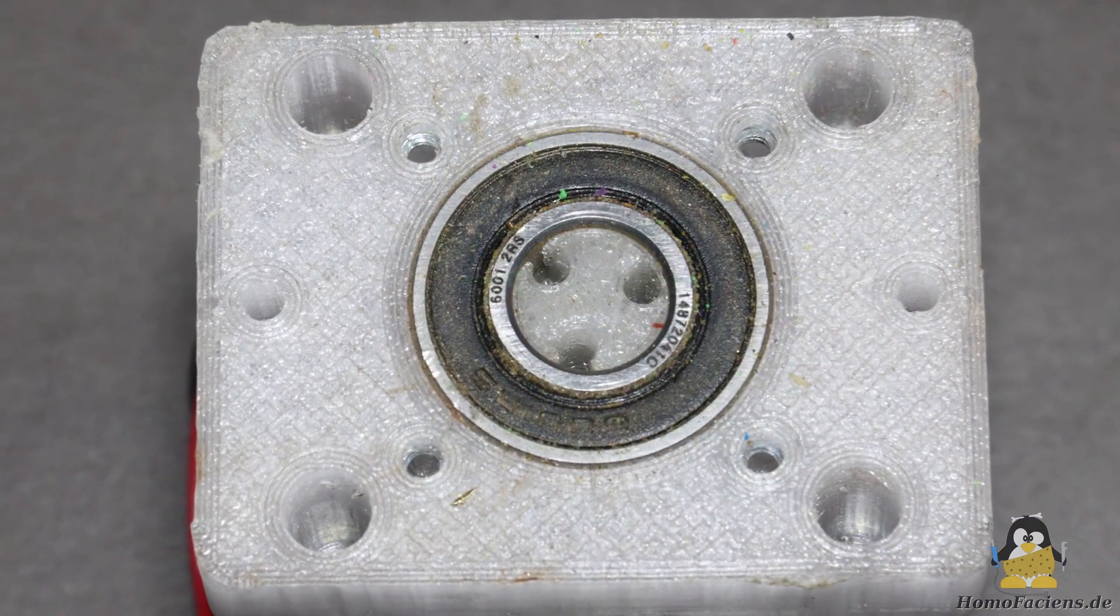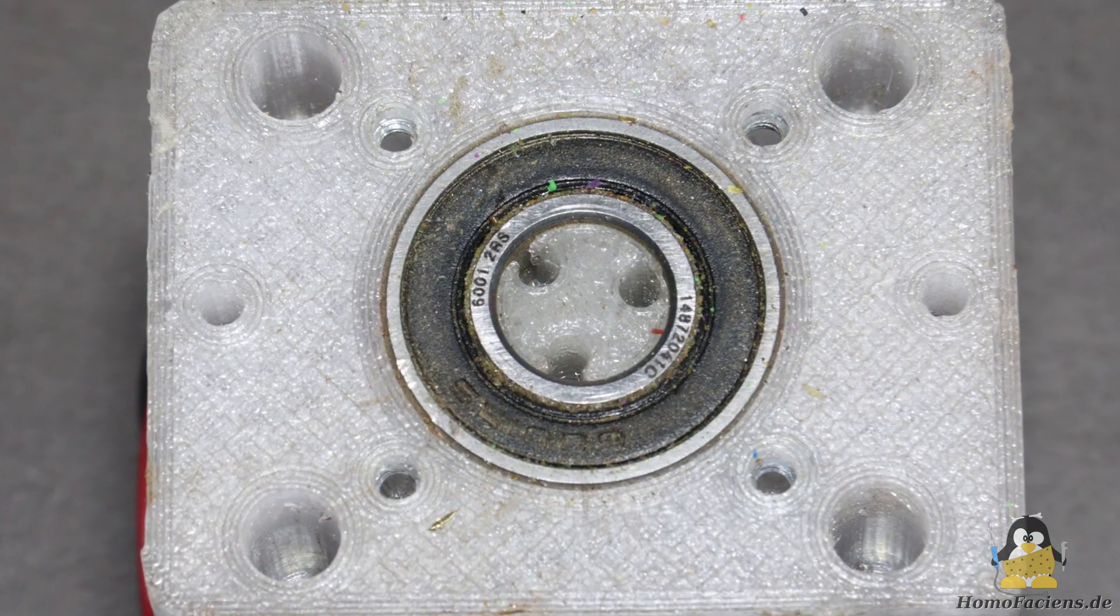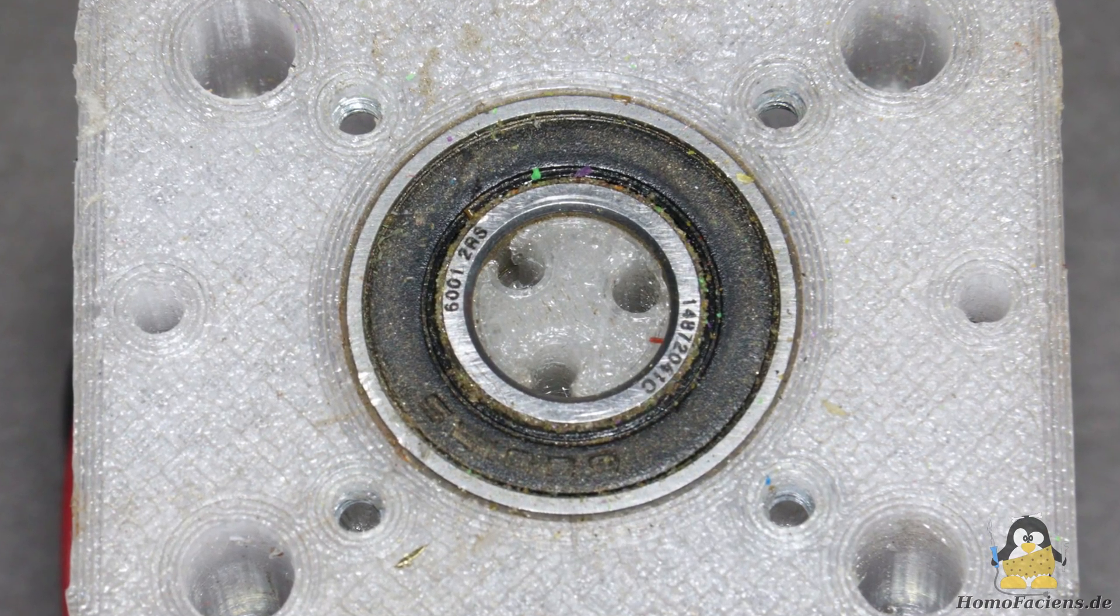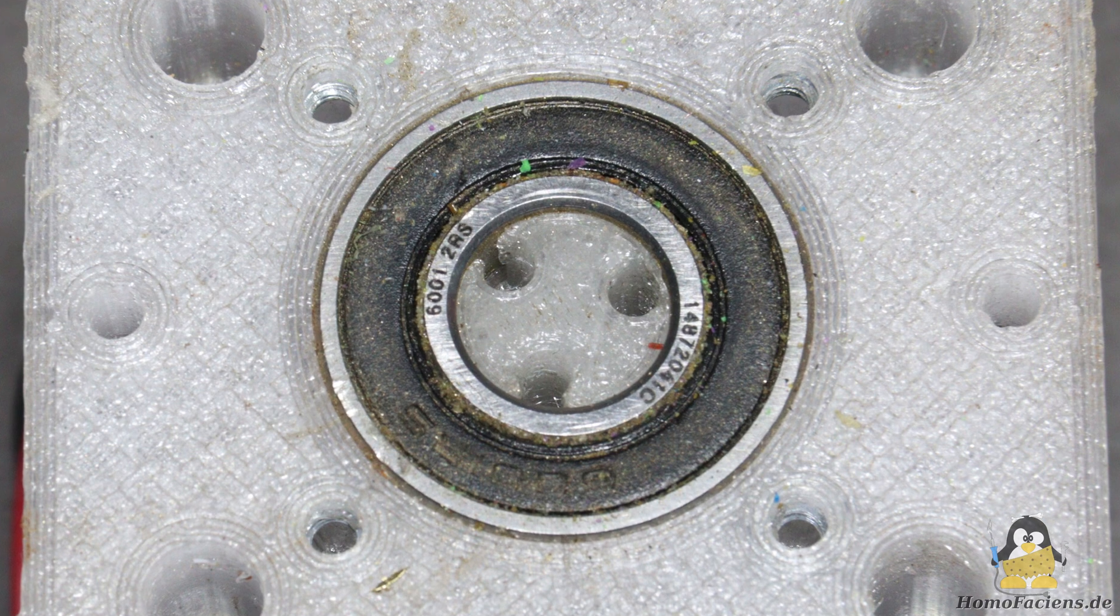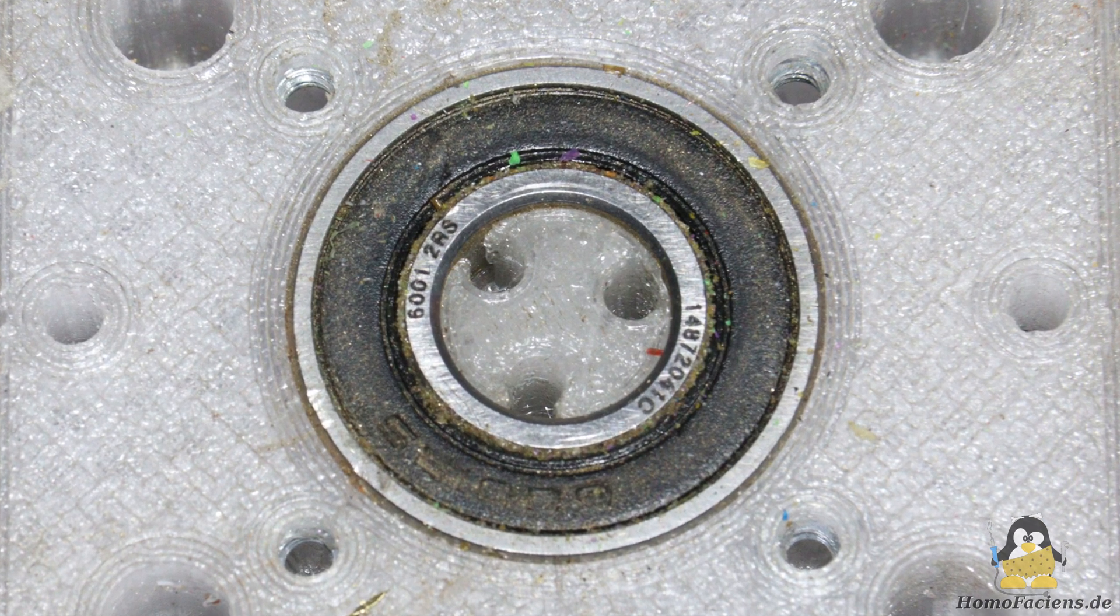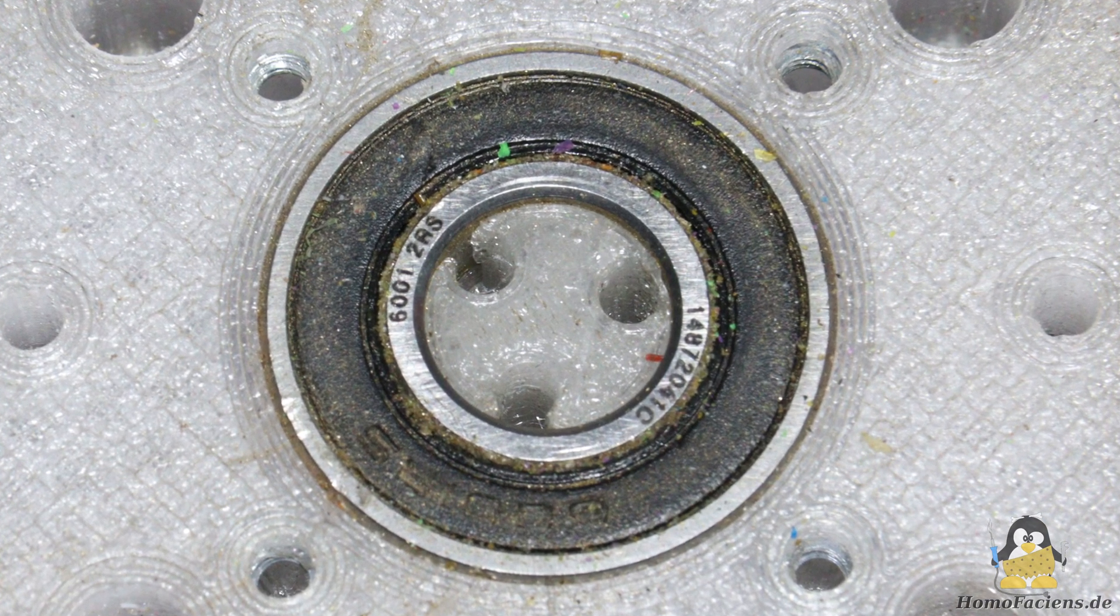However, I prefer to use standard parts, so I'm using an inexpensive radial bearing type 6001 with 28mm outer diameter. Time will tell if this is sufficiently sturdy.